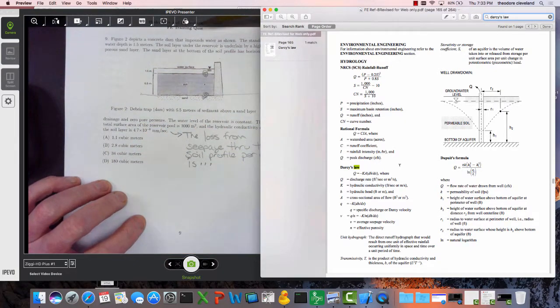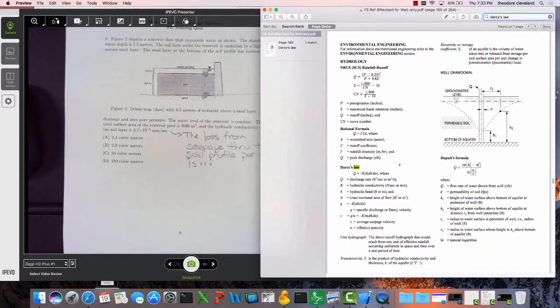The other information: standing water depth, soil layer is important, sand layer at the bottom of the profile has horizontal drainage and zero pore pressure. That's a key trick - that's telling us that the equivalent water pressure at that location is zero. So let's make that our bottom datum.